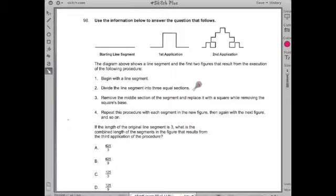Now I'm going to read it over. This is where I go into a little bit more detail. I start using my left side, reading each sentence, thinking about what it means, going line by line until I get to the end. So here it goes. Starting from the top. 98. Use the information below to answer the question that follows. The diagram above shows a line segment and the first two figures that result from the execution of the following procedure.